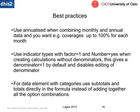For best practices, it's good to make sure that you're using annualized data when combining monthly and annual data. Data is collected in different time periods and you always want to make sure that you're comparing the right thing. You don't want to compare annual data with monthly data in a confusing way. If you have monthly data, make sure it is covering all of the months before comparing to annual data — same with weekly and bi-monthly or bi-annual data. When you want to create calculations without denominators, you want to use a factor of one, meaning the denominator is one and your numerator therefore equals your indicator.